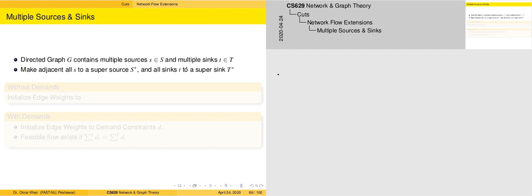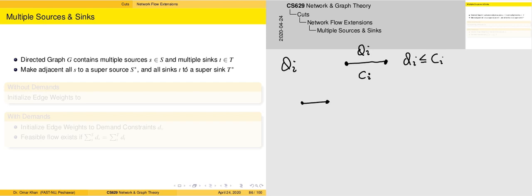Recall that in the standard max flow problem, we start with the concept of a flow along an edge. The flow across edge i is less than or equal to a certain capacity along that edge. We add up all the different flows across the different edges, and the edges form a path. We take the summation of the flow across those edges and we get a flow across the path mu.